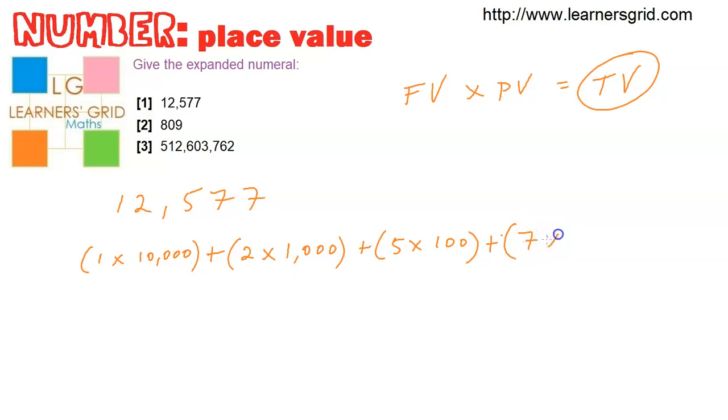Plus we've got a seven, which is the face value, multiplied by the place value, which is ten, plus another seven multiplied by the place value, which is a one. And that is a fully expanded version.